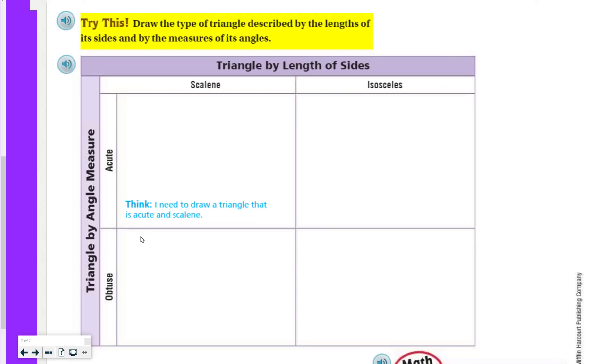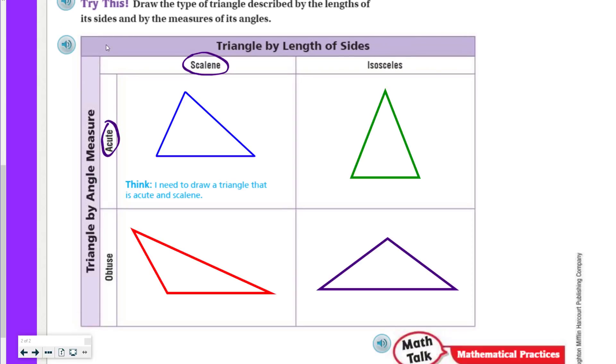Let's move down. Let's try this. Draw the type of triangle described by the length of its sides and by the measures of its angle. We have some work here. Should I just do this freehand, or should I get my lines? I should probably get my lines. Triangle by angle measure. Triangle by length of sides. So we have an acute scalene. Then we have an acute isosceles, and then I have an obtuse scalene, which we just had one up there, and an obtuse isosceles. I need to draw a triangle that is acute and scalene. So what I did was I went ahead and just drew all my figures, and that way I'll just go over them to save a little bit of time on the video.